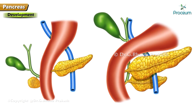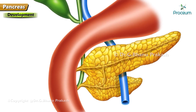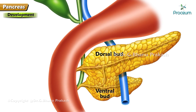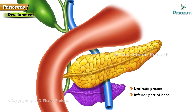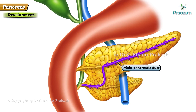Development: the pancreas develops from two separate buds — the dorsal bud and the ventral bud. The larger dorsal bud arises directly from the duodenum and forms part of the head, the whole of the neck, body, and tail of the pancreas. The duct of the dorsal pancreatic bud forms the main pancreatic duct with the duct of the ventral bud; the proximal part of the dorsal duct forms the accessory pancreatic duct. The smaller ventral bud arises in common with the hepatic bud of the liver and forms the uncinate process and inferior part of the head. The duct of the ventral bud opens into the duct of the dorsal pancreatic bud near its neck, forming the main pancreatic duct which opens into the duodenum.